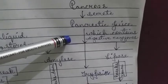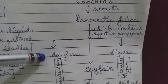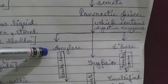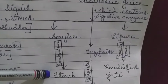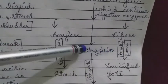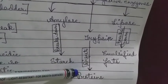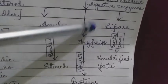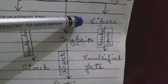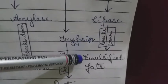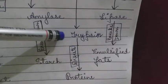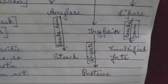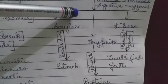The pancreas secretes pancreatic juice, which contains digestive enzymes. The first is amylase, which breaks down starch. The second is trypsin, which digests proteins. The third is lipase, which breaks down emulsified fats. Remember: lipids is the scientific term for fats, and lipase is the enzyme that breaks down fats.